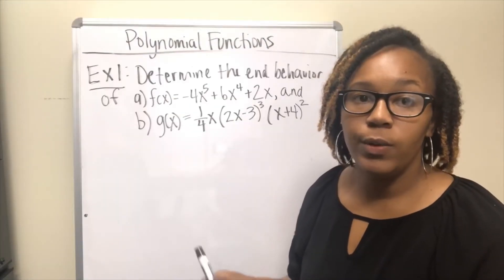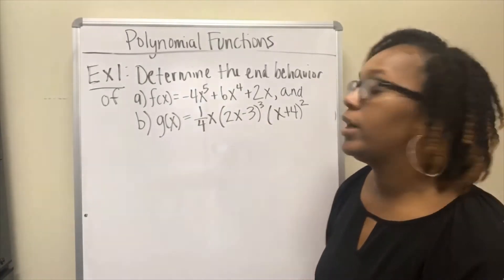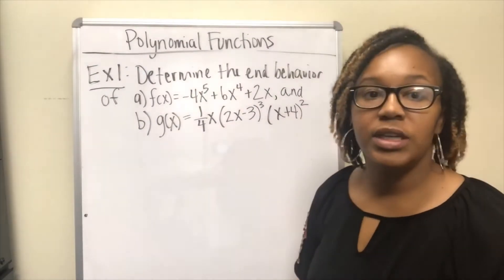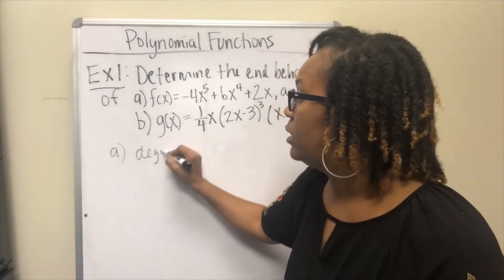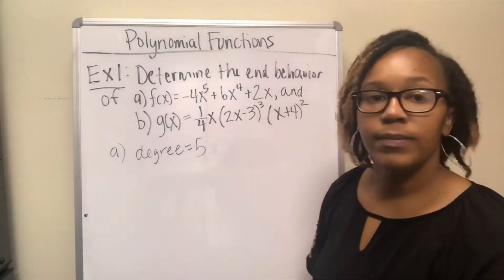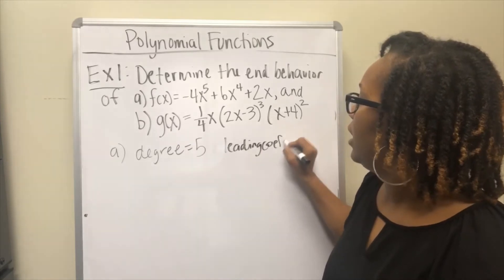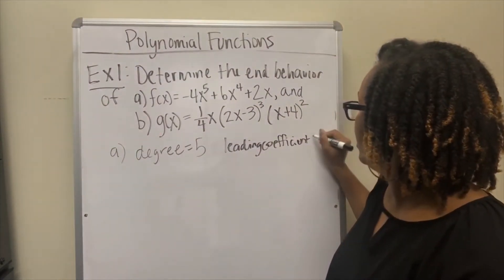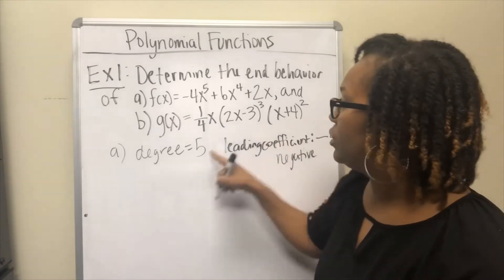For Example 1A, f(x) = -4x⁵ + 6x⁴ + 2x. The degree is 5 — the biggest exponent — which is odd. The leading coefficient is -4, so the sign is negative. That's the odd-negative case: start at the top, go to the bottom.